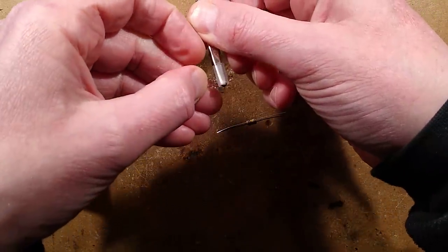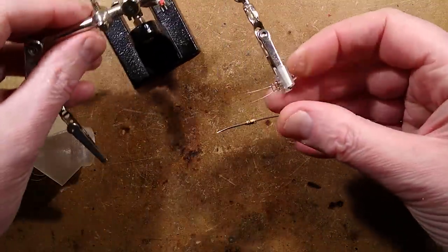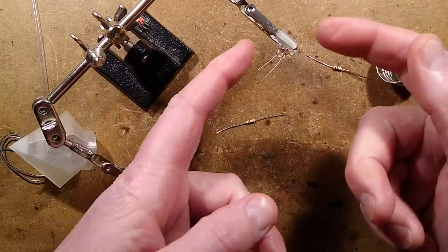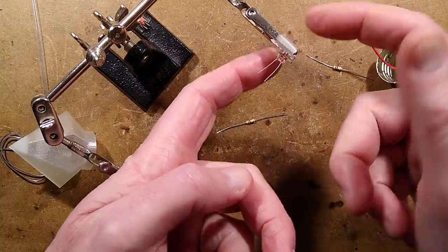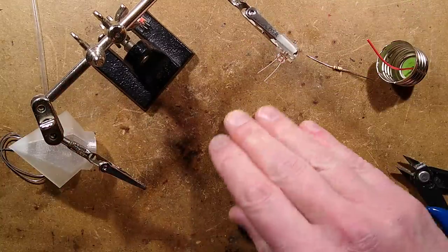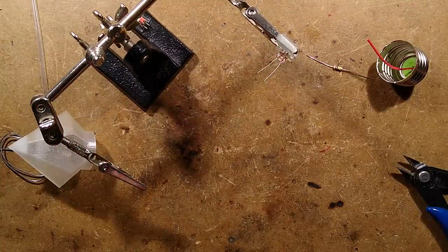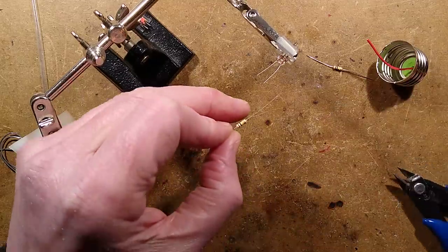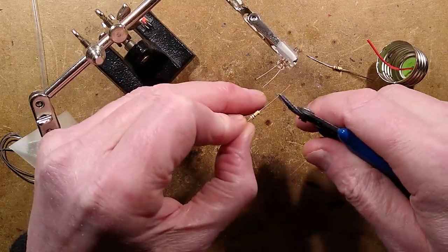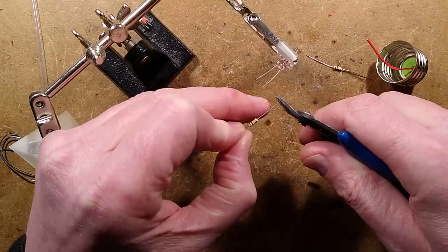I'm going to clamp it in between the jaws of the helping hands. This is a bit of silicon sleeving in the jaws just to protect the lamp and make it grip better, otherwise they tend to ping out. Then I'm going to leave this fairly long actually, so I should cut this one at about the same length.